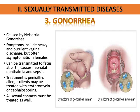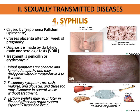The next STD is gonorrhea, caused by Neisseria gonorrhoeae. Similar to chlamydia, it presents with heavy purulent vaginal discharge but is often asymptomatic in females. It can be transmitted to the fetus at birth and can cause neonatal ophthalmia as well as sepsis. Treatment is penicillin, but for allergic clients, erythromycin or cephalosporins may be used. All sexual contacts must be treated as well.